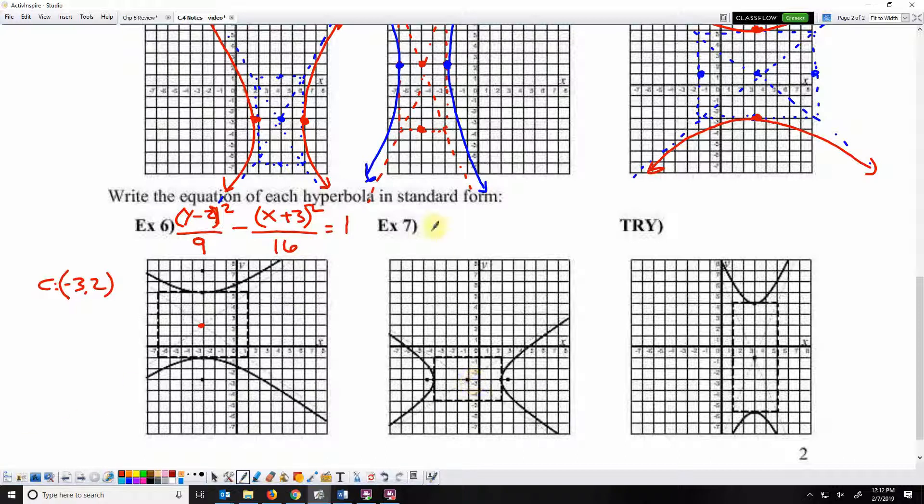My second one is horizontal, so X will go first. The center of this hyperbola is negative 1, negative 3. So I'm going to have X plus 1 squared over something minus Y plus 3 squared over something equals 1. The horizontal stretch, 1, 2, 3 squared, is 9.